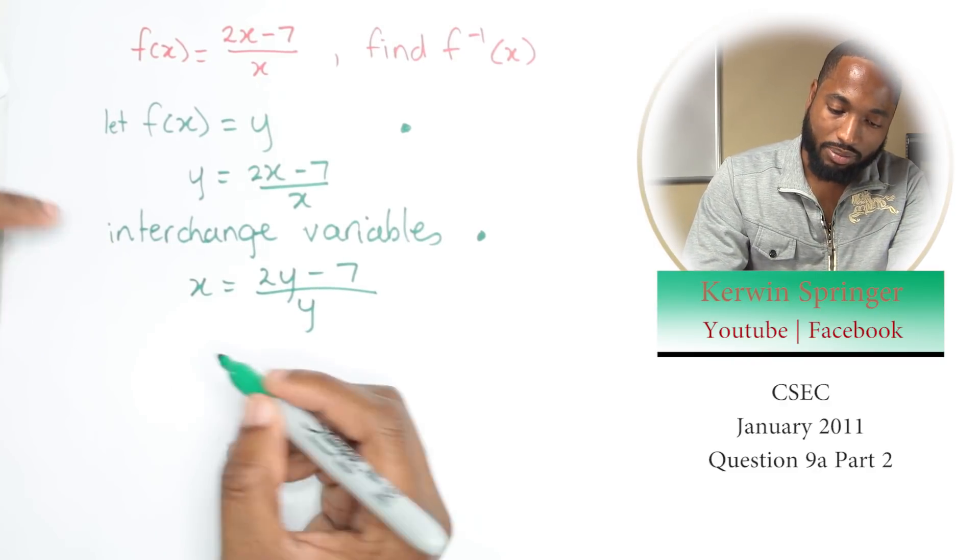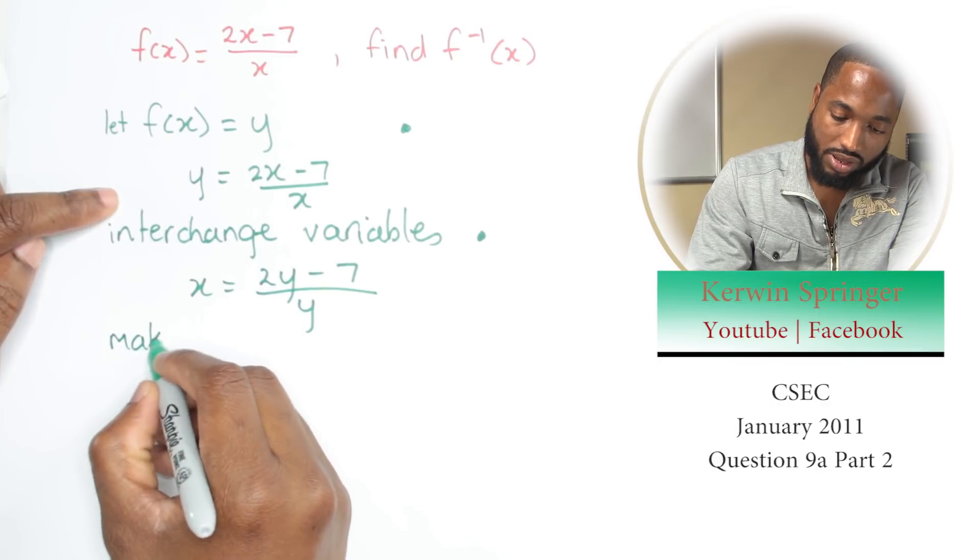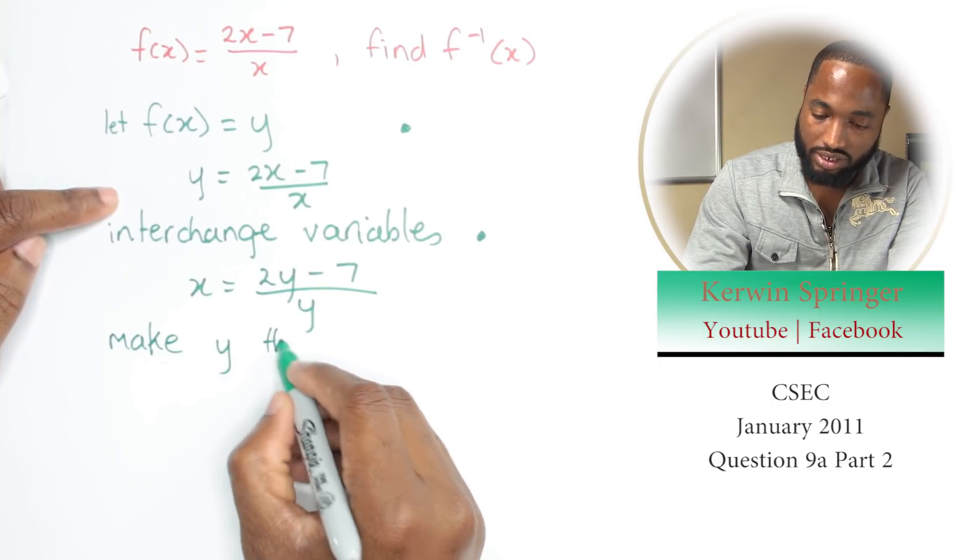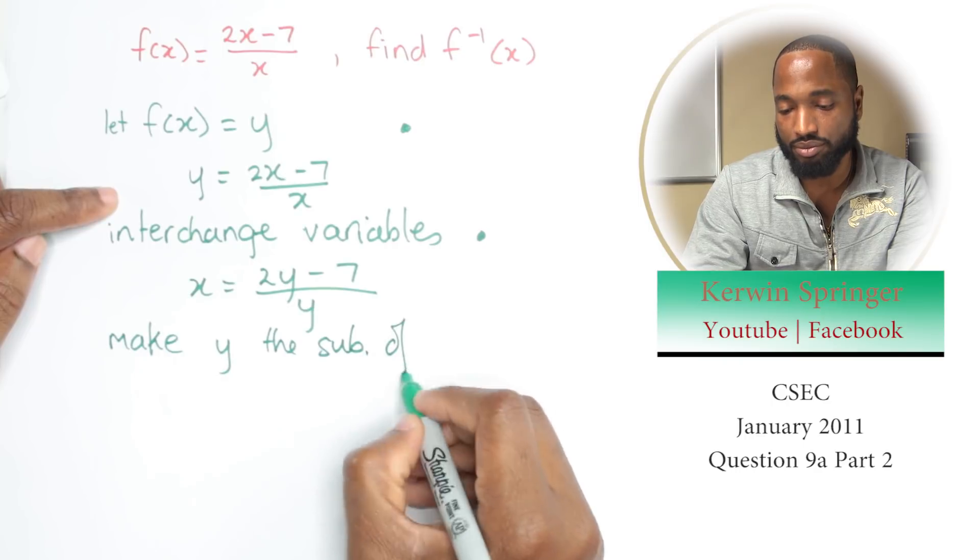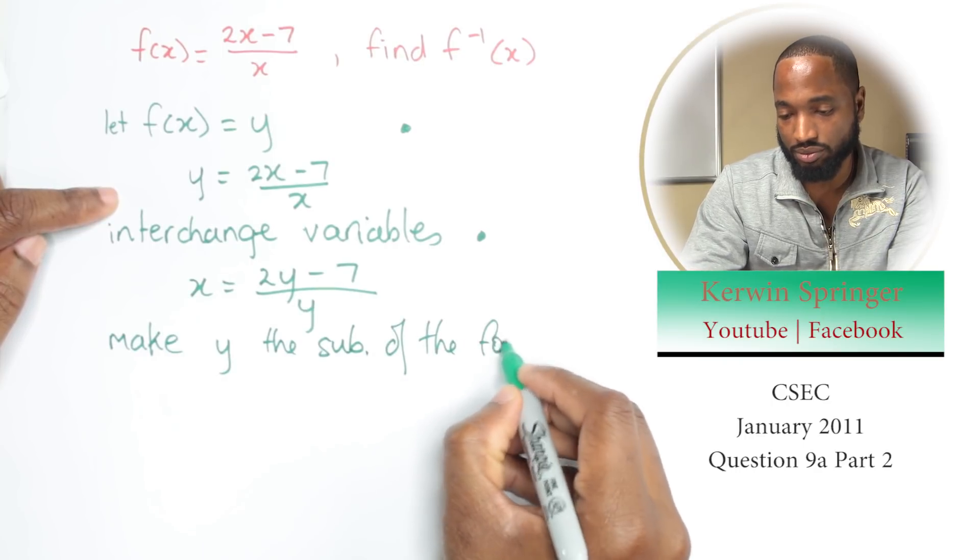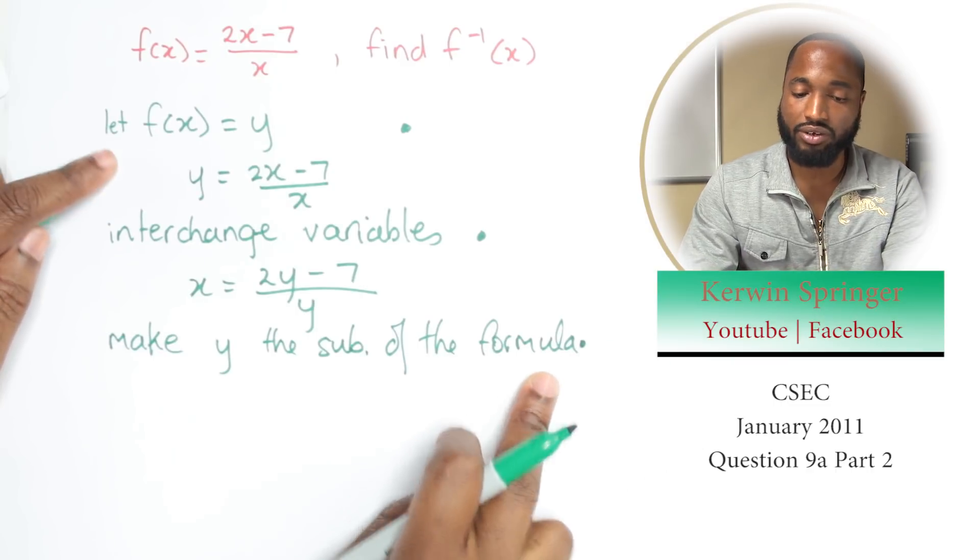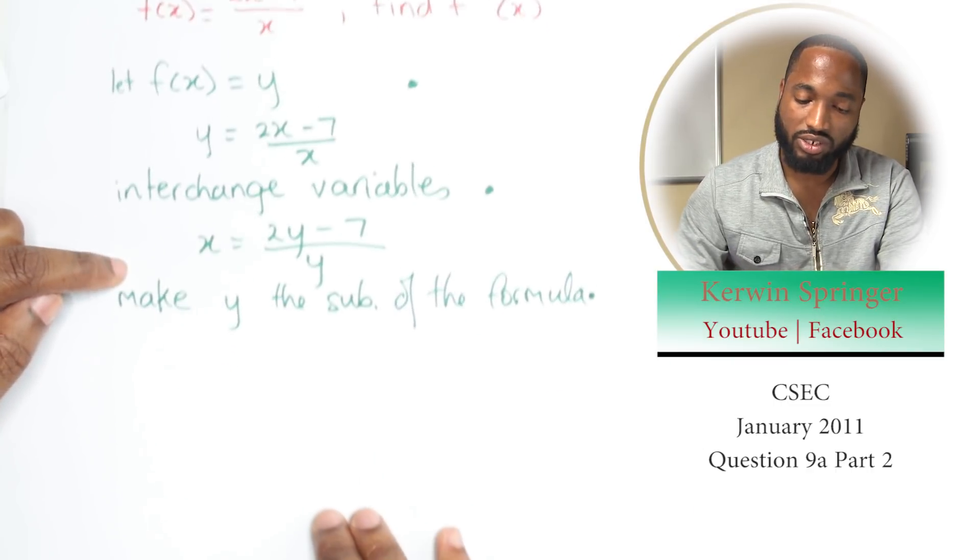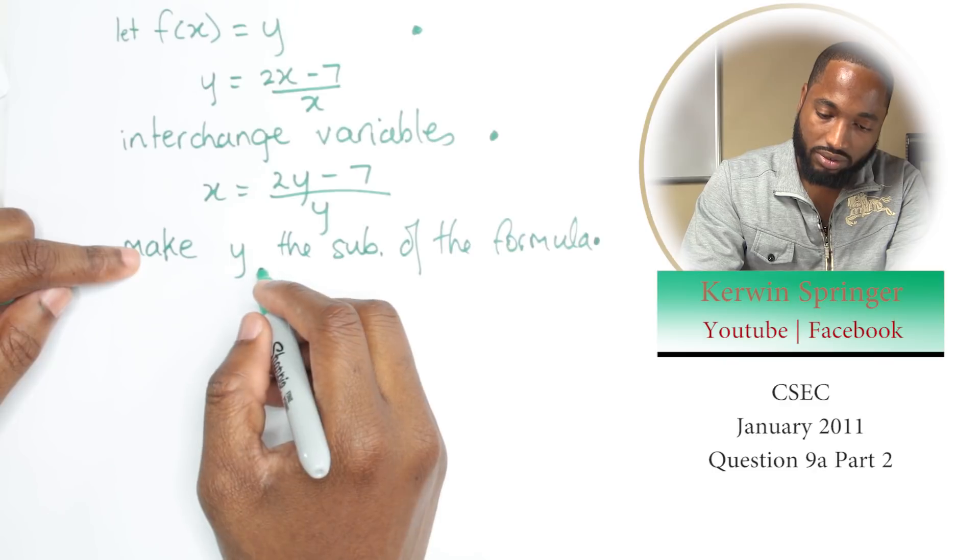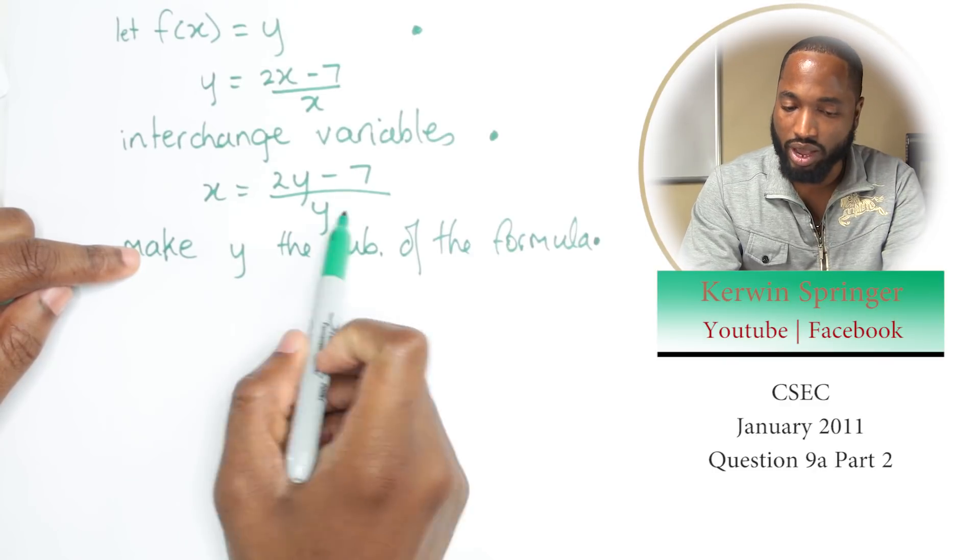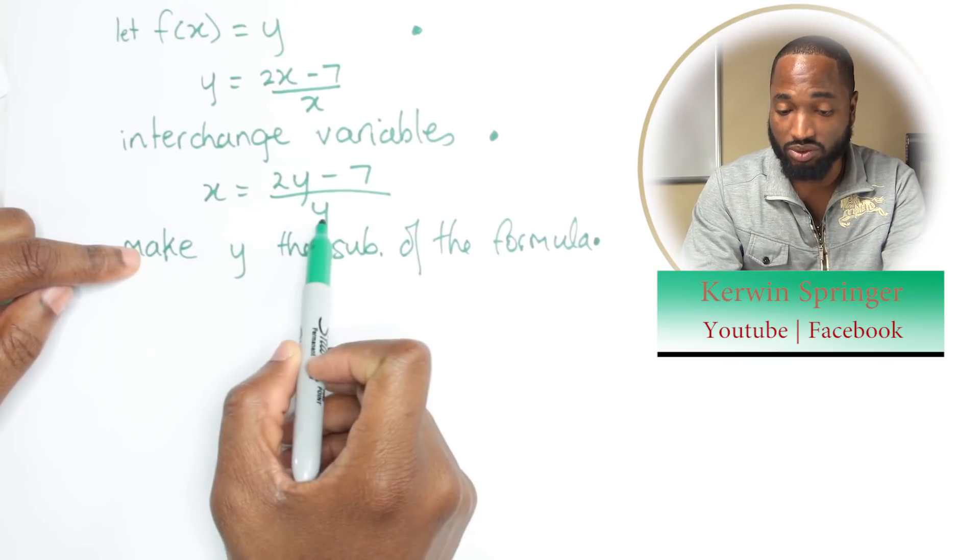Now next step, make y the subject of the formula once again. This is the third step. So let's do this. How to make this y the subject of the formula? There are two y's, so let's bring this y up here.